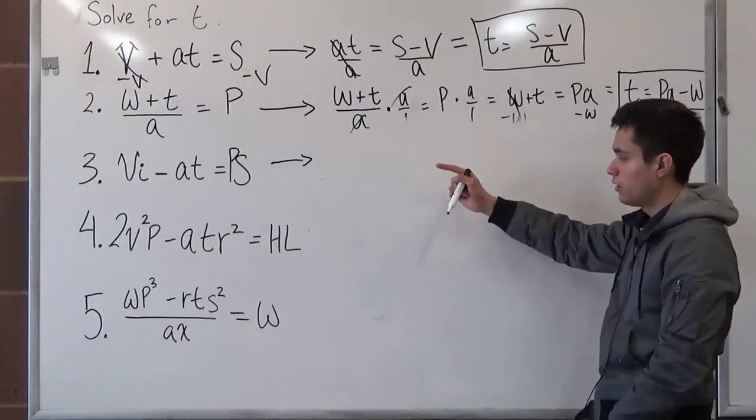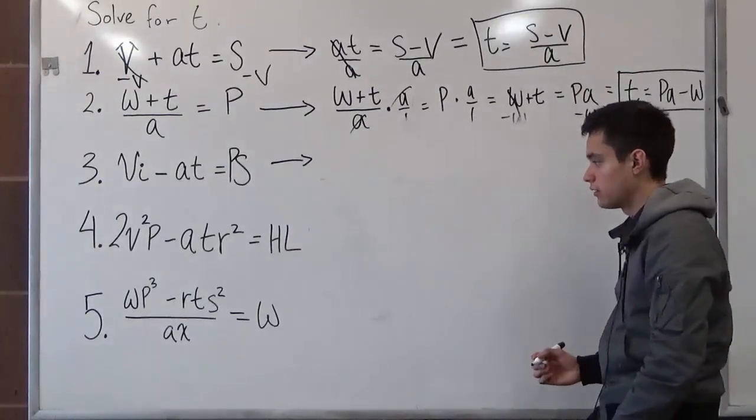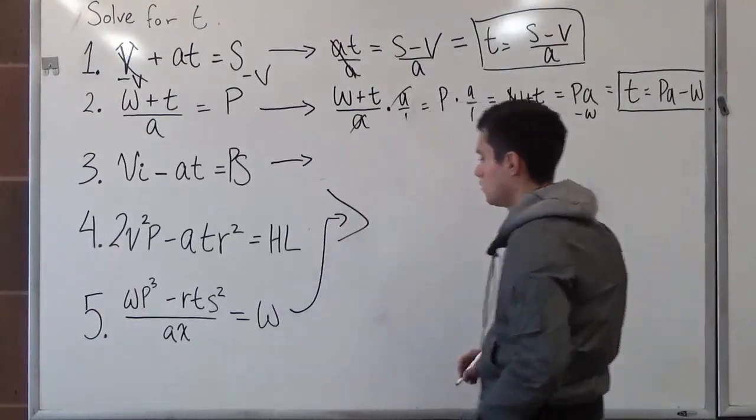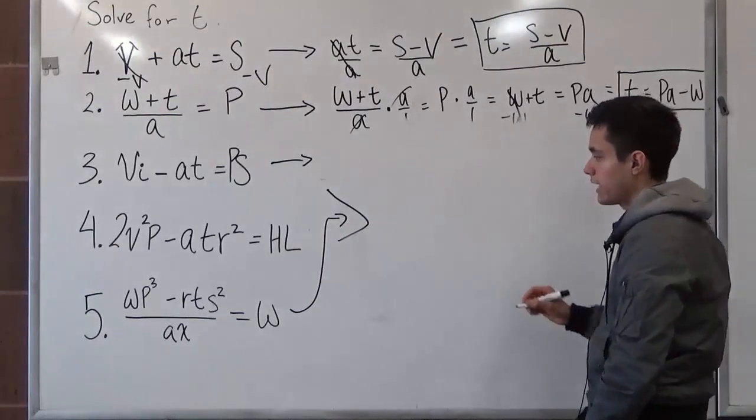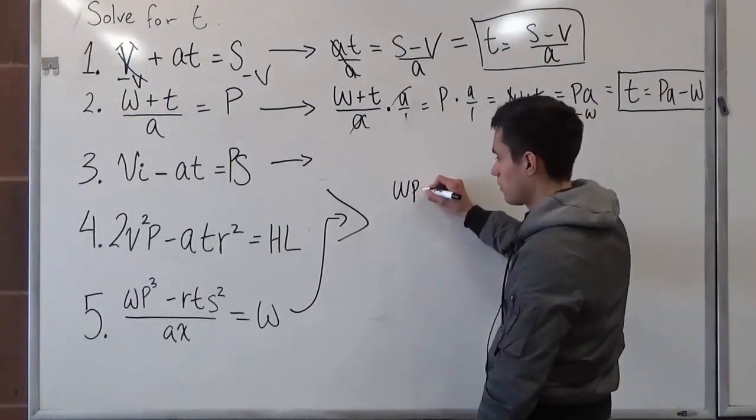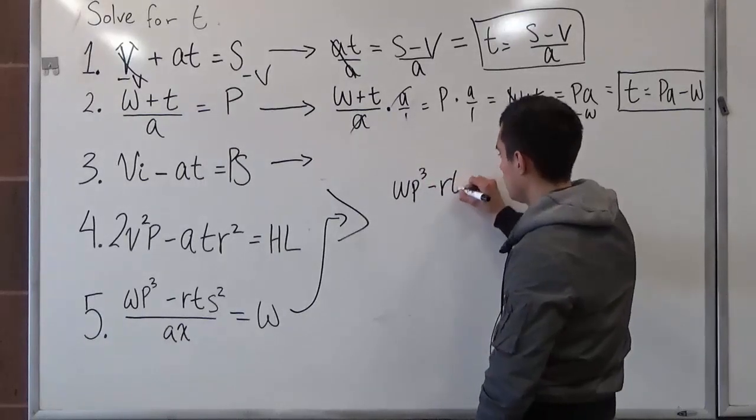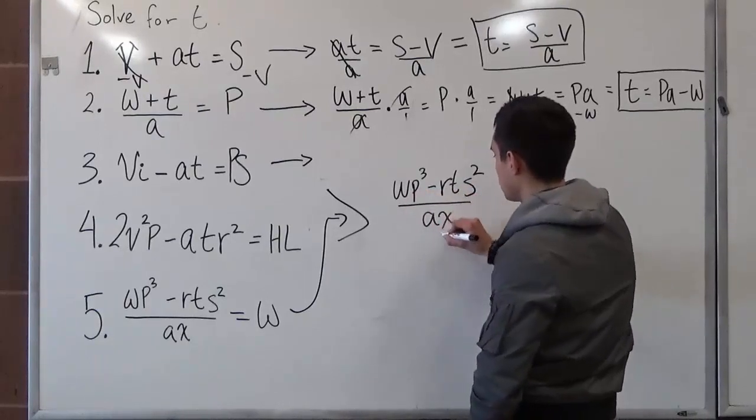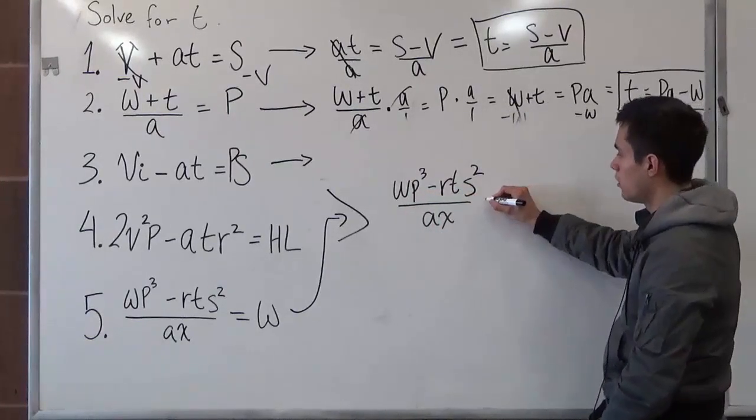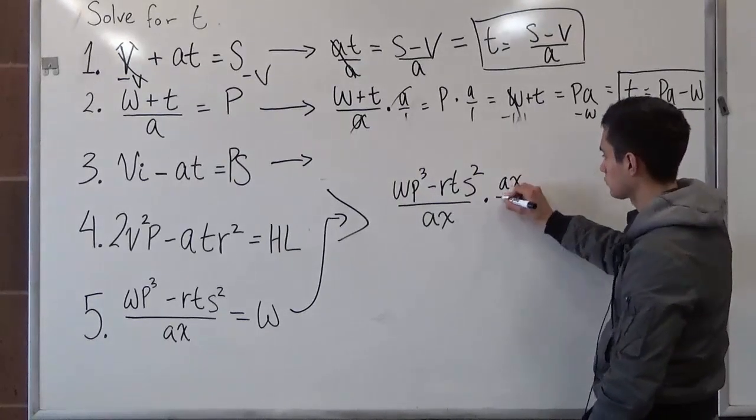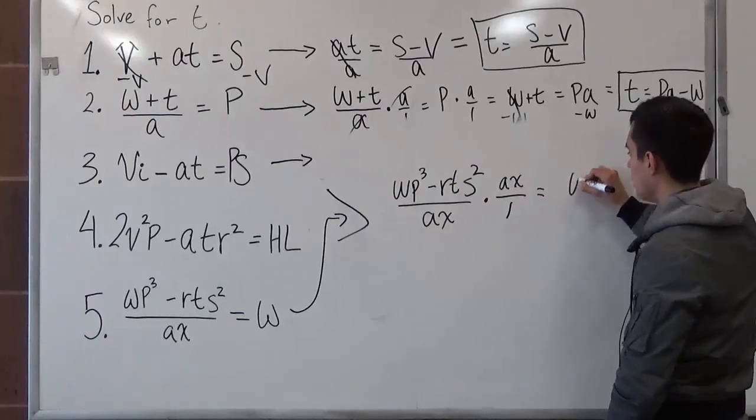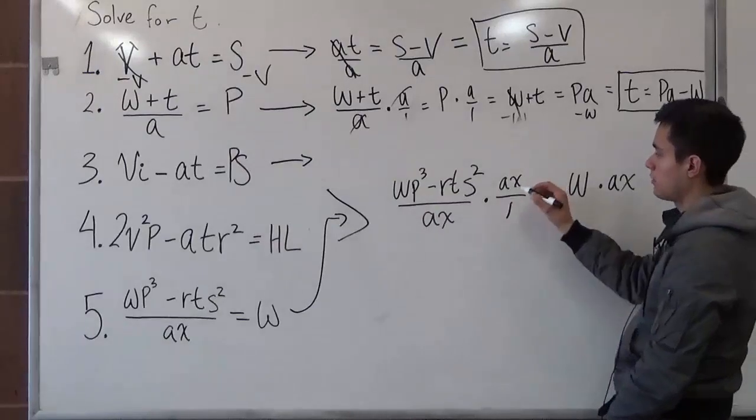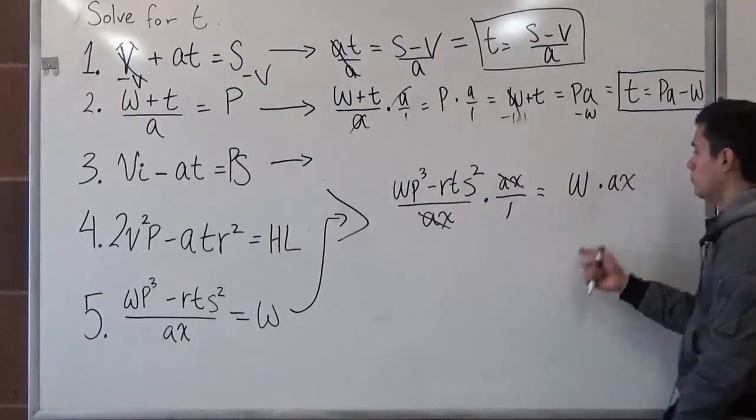When we have the denominator, we always want to multiply it to bring it to the other side. So let's just bring this up here. And now we have wp to the third minus rts squared over ax. So as we did in question number 2, we multiply the denominator equal to w times a times x. We multiply the denominator in order for it to cancel out and bring it over to this side.